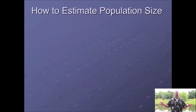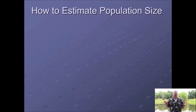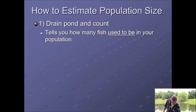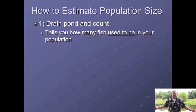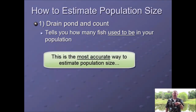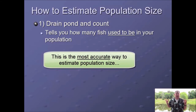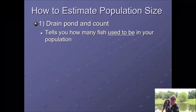We have many ways that we can go out to a pond, lake, or river — any population of fish — and estimate how many fish are in that body of water. The first and most accurate is to drain the pond and count the fish. This is very accurate because you are going to count every single fish. However, that tells you how many fish you used to have. Obviously this is not a good long-term solution, but it is the gold standard of population density estimates.